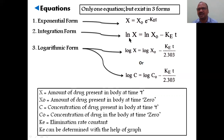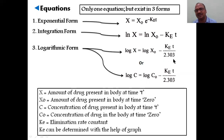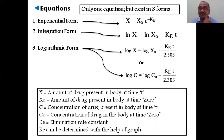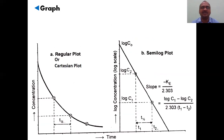The integration (natural log) form is: ln(X) = ln(X₀) − Ke·t. The logarithmic form is: log(X) = log(X₀) − (Ke·t)/2.303, where 2.303 is a constant. Note that X refers to the amount of drug in the body, while C refers to concentration. All three forms of the equation are used to find the amount or concentration of drug remaining in the body after a given time such as two, three, or five hours.